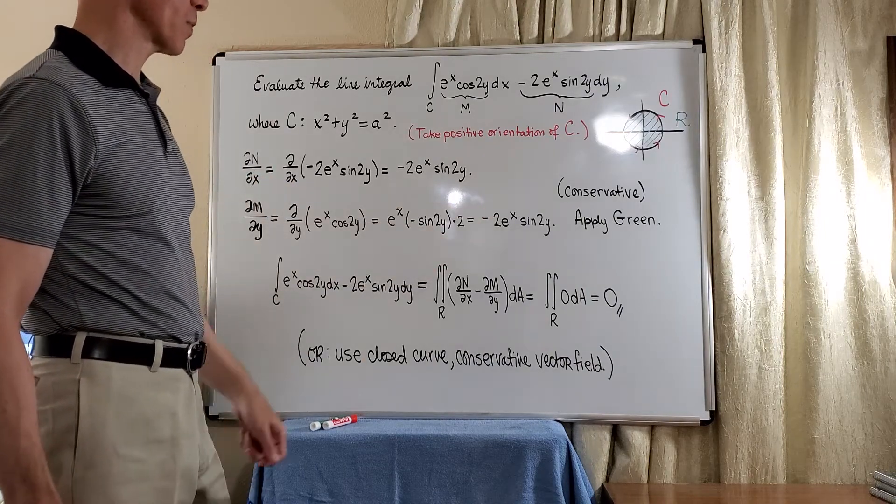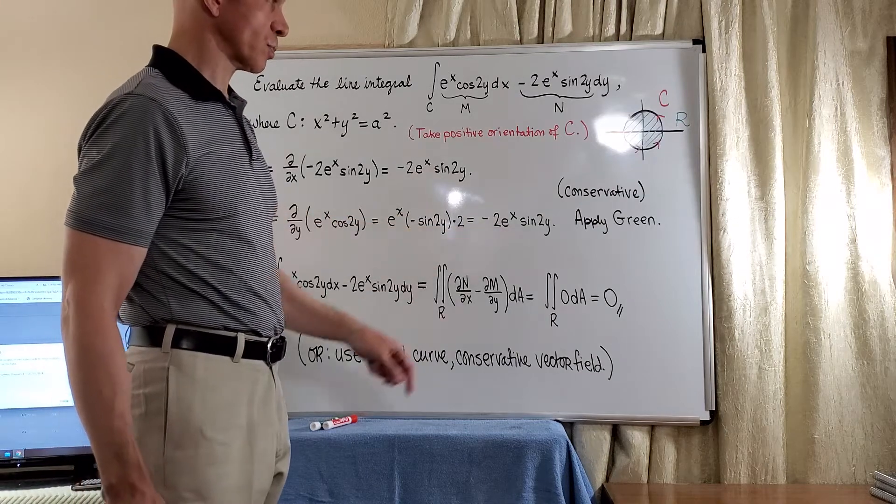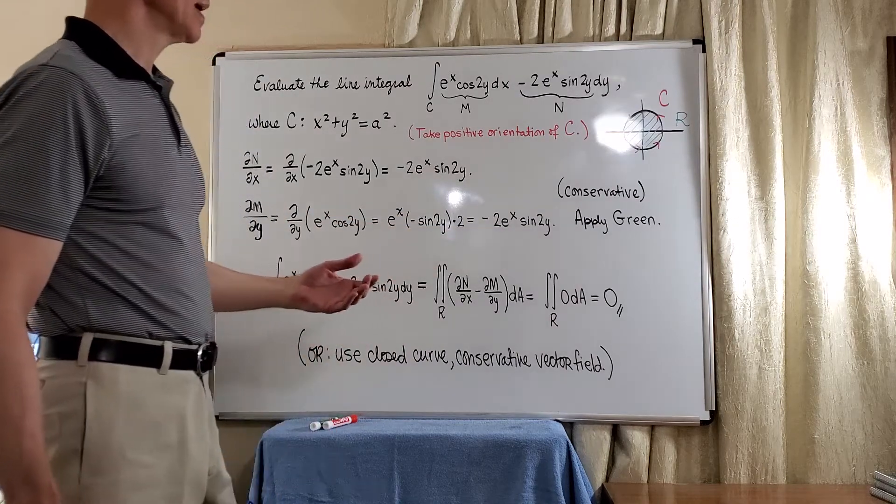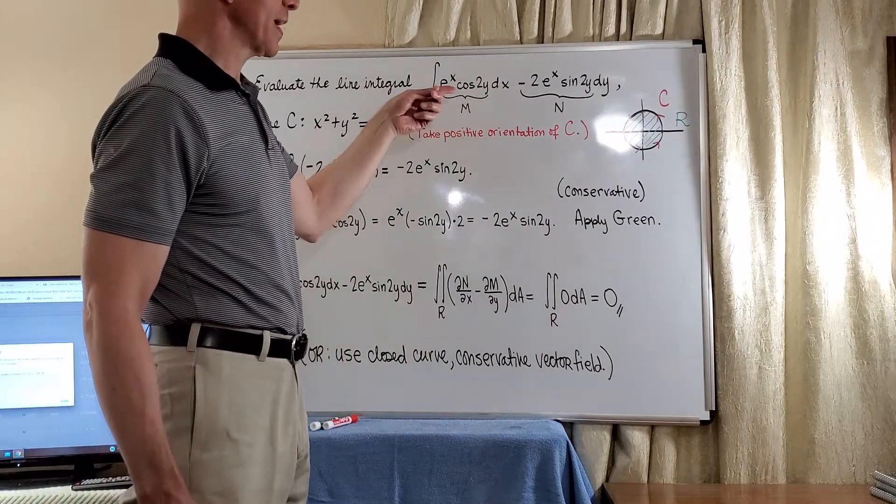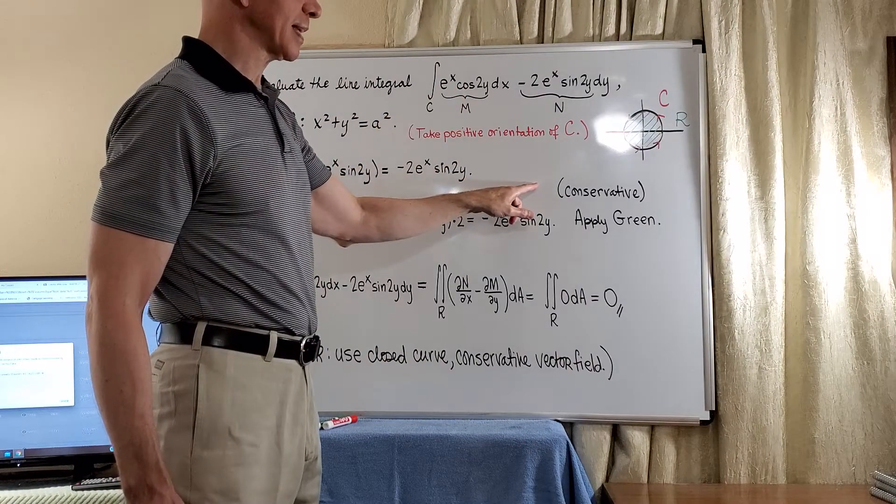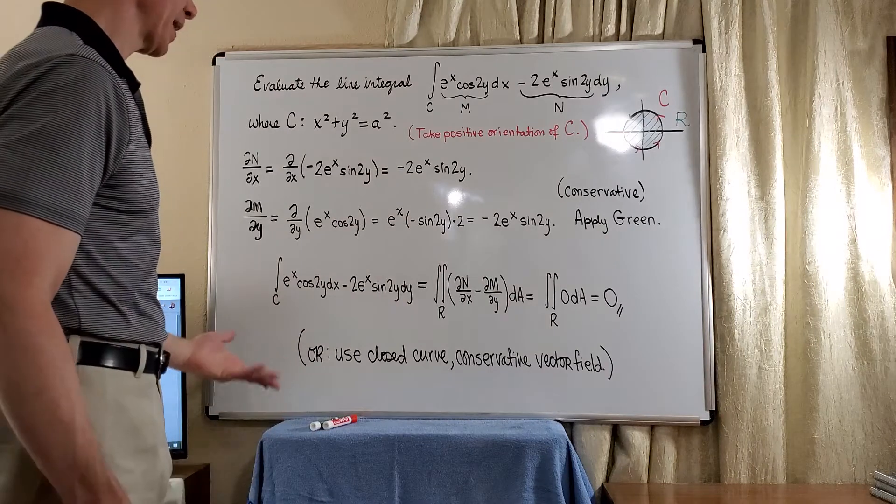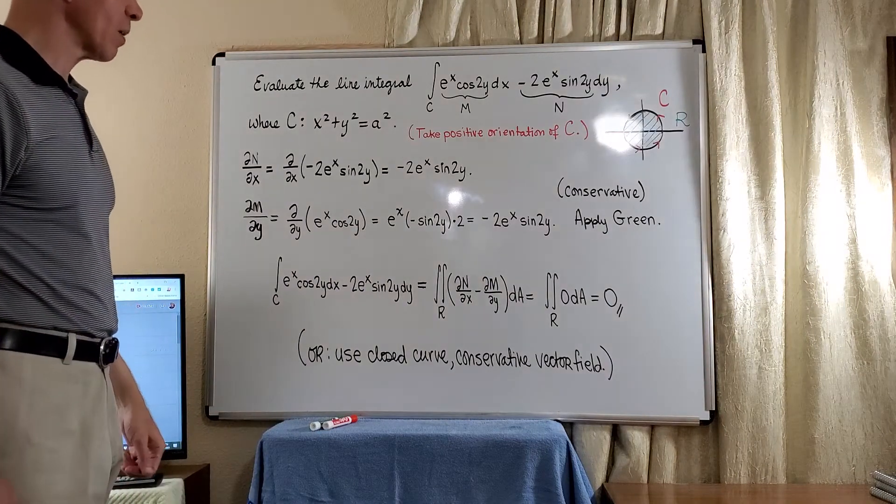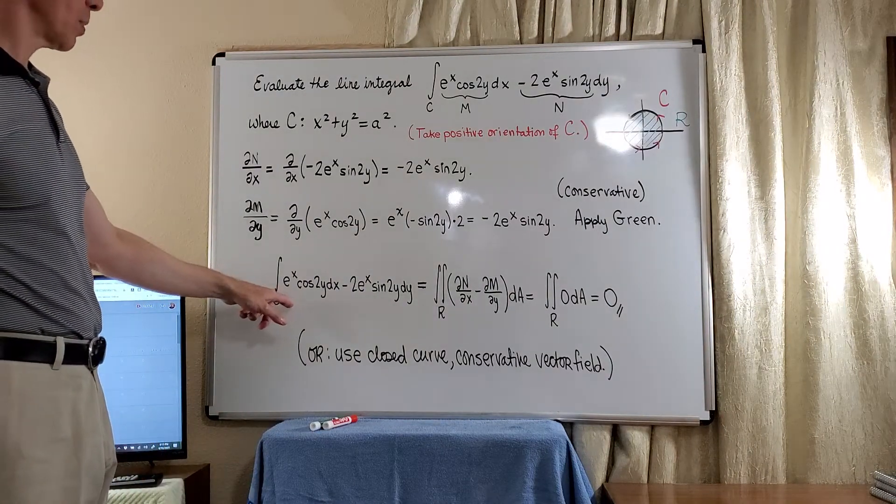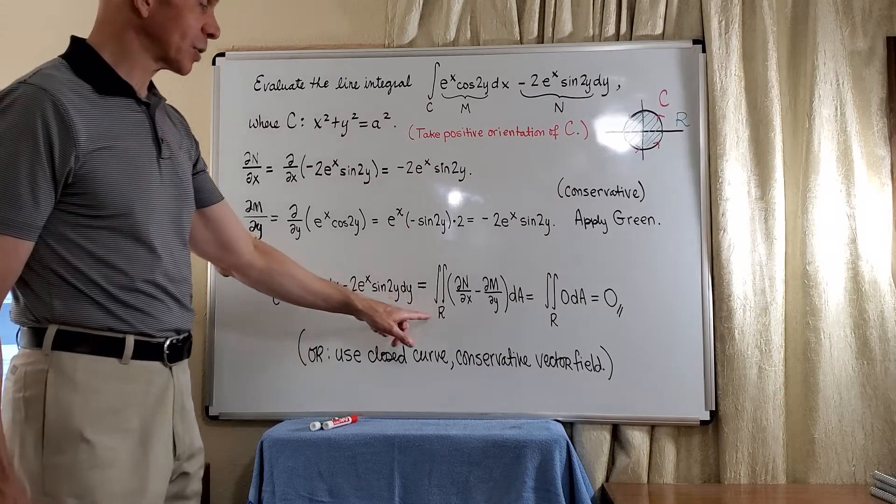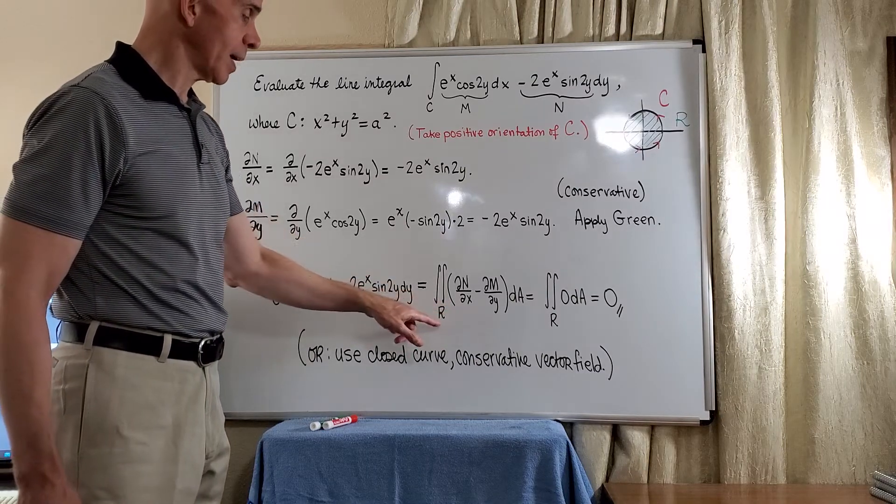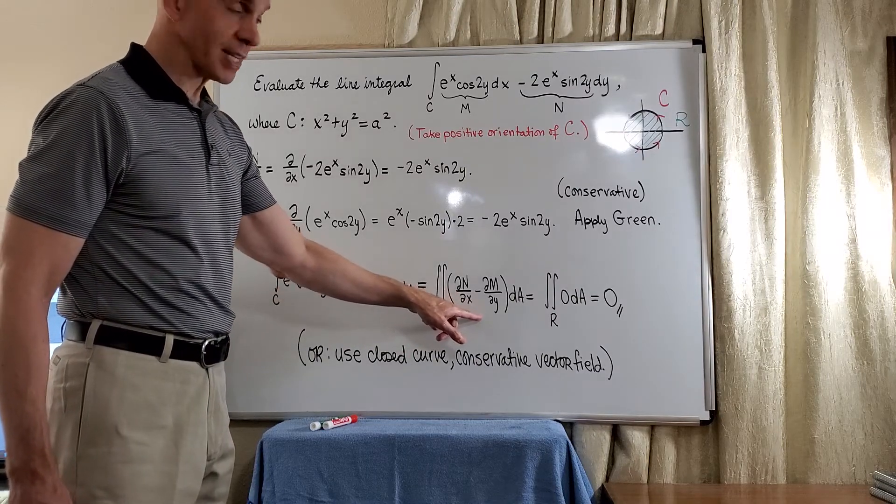And if we move the negative 2 up front, we see that these two partials are equal. Not only if we think of this as a vector field, we see that it's conservative, but we also see that we can apply Green's Theorem. So now we know that the line integral about C is actually equal to the double integral about R of this integrand.